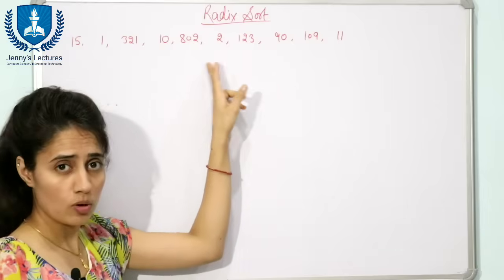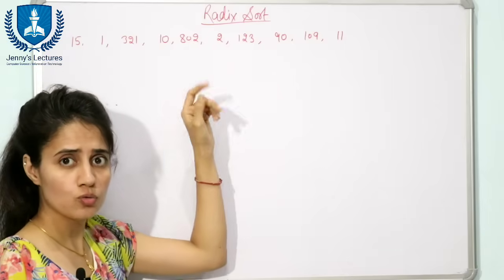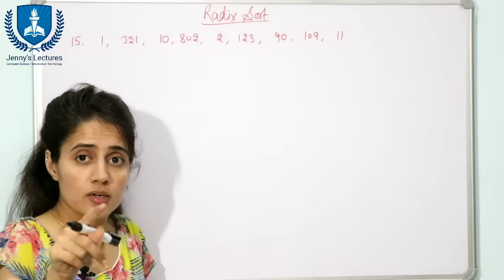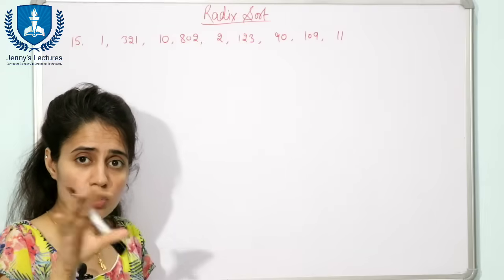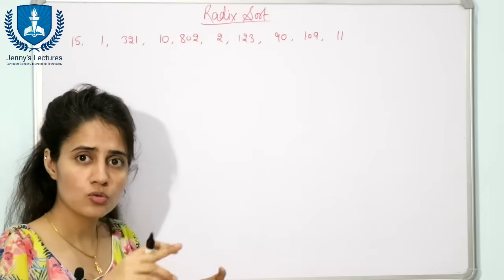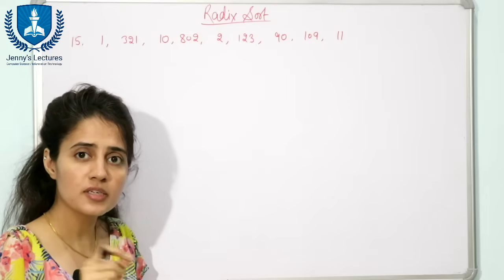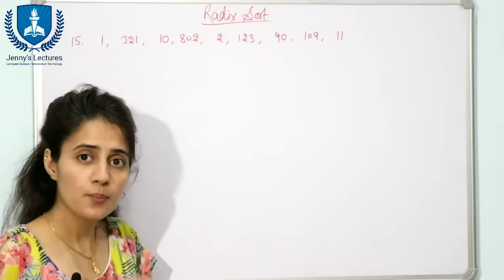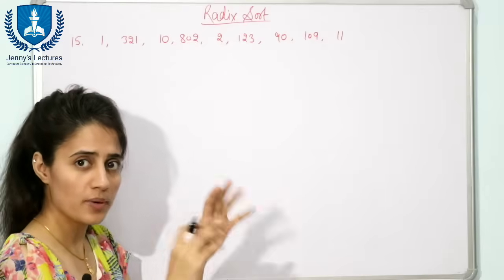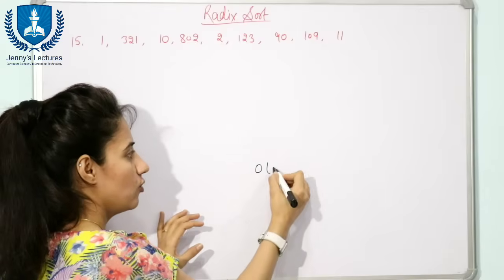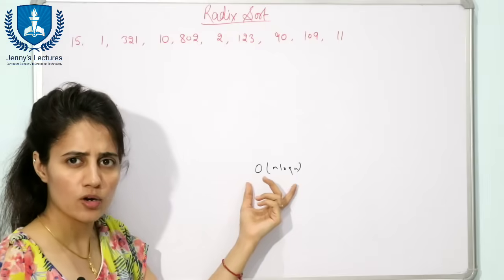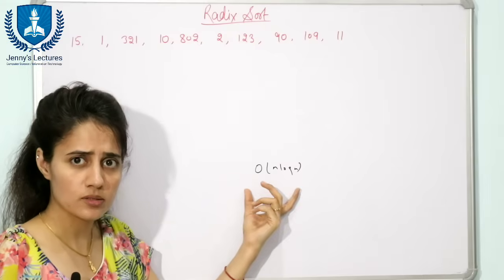Let us take an example and sort this data using Radix Sort. The sorting algorithms we have discussed — bubble, quick, merge, selection, insertion — those are comparison-based sorting algorithms, and the best time complexity for those is O(n log n), or omega(n log n). They cannot do better than this.